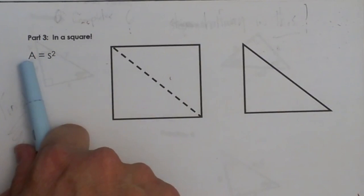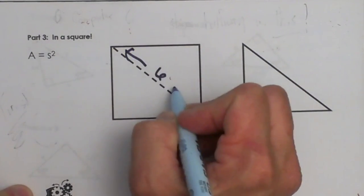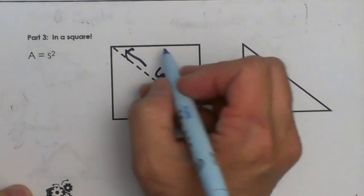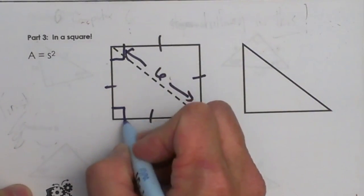We're trying to find the area of a square and we're given the diagonal is 6. What do we know about a square? We know all four sides are equal and we know we have four right angles.